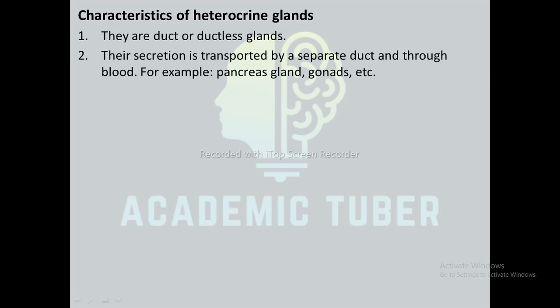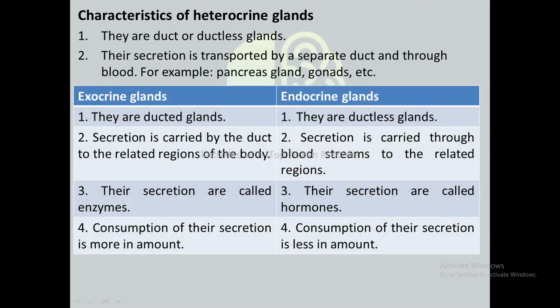Heterochrine glands are both ducted and ductless glands. The secretion is transported partly by a separate duct and partly through the blood. Examples include the pancreas and gonads. In comparison: exocrine glands are ducted whereas endocrine glands are ductless. In exocrine glands, secretion is carried by the duct to the body region, whereas in endocrine glands it is carried through the bloodstream. The secretions of exocrine glands are called enzymes, while those of endocrine glands are called hormones. Exocrine gland secretions are consumed in larger amounts, while endocrine gland secretions are consumed in smaller amounts.